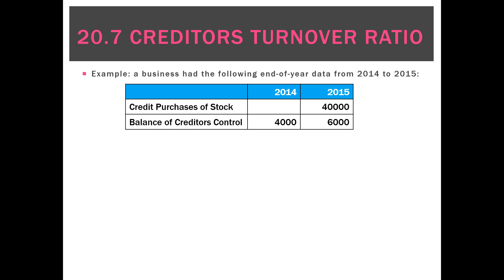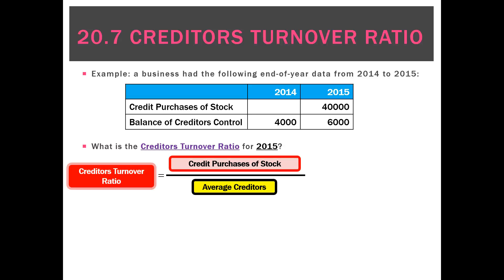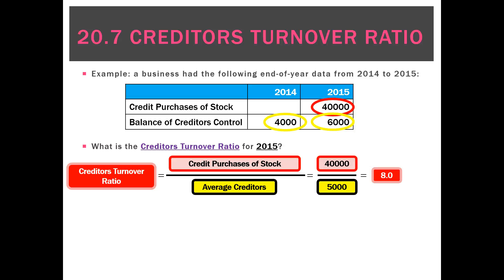Looking at an example: in 2015, the business purchased on credit stock of $40,000. The balance of creditors control at the end of 2014 was $4,000 and at the end of 2015 was $6,000. For the creditors turnover ratio for 2015, we take credit purchases of stock of $40,000 divided by average creditors of $5,000, giving a result of 8.0 times.